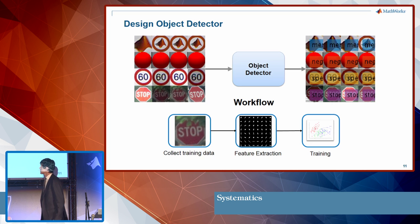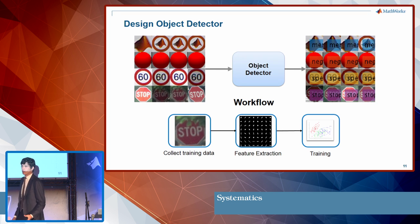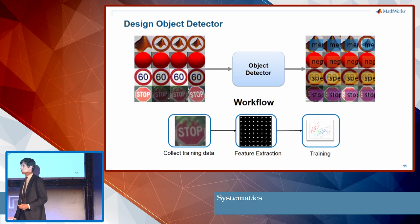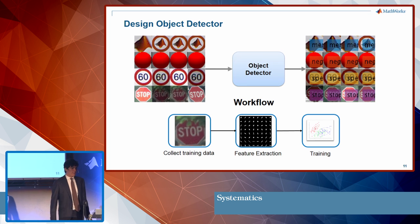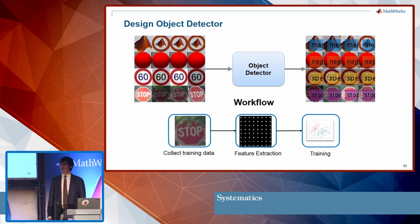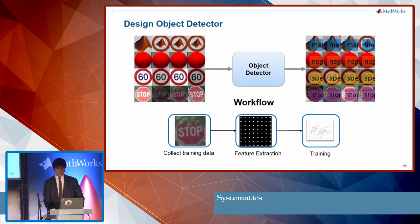For this classical machine learning approach, you need to start with a bank of training data — images of the different signs — and then go through a process: first manual feature extraction, where you extract information from the data, and then train a network. At this point I want to show you a small MATLAB demo to show you how this can be done.